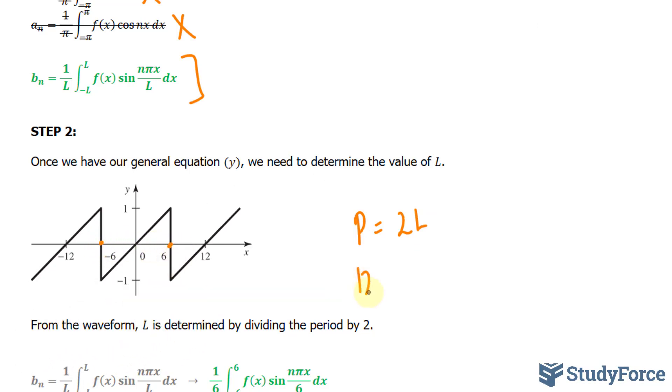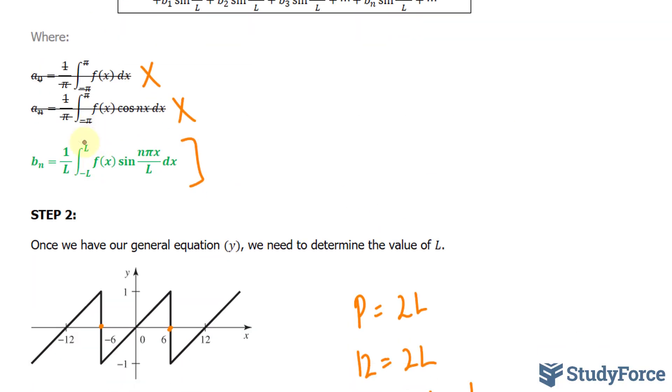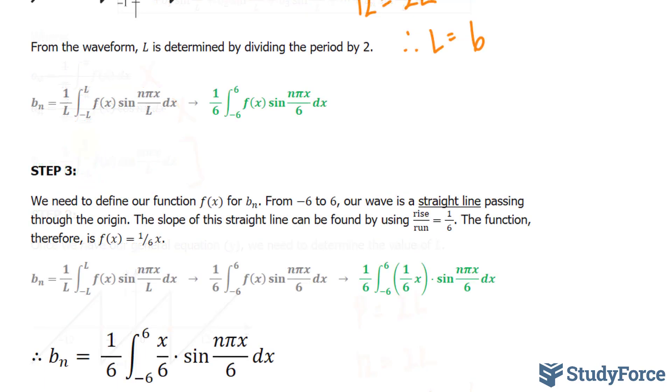So our period is 12. Therefore, L is equal to 6. So if you go back to these, we now can replace all of these L's with 6. In addition, we now know our lower and upper bound. This is what you should have.